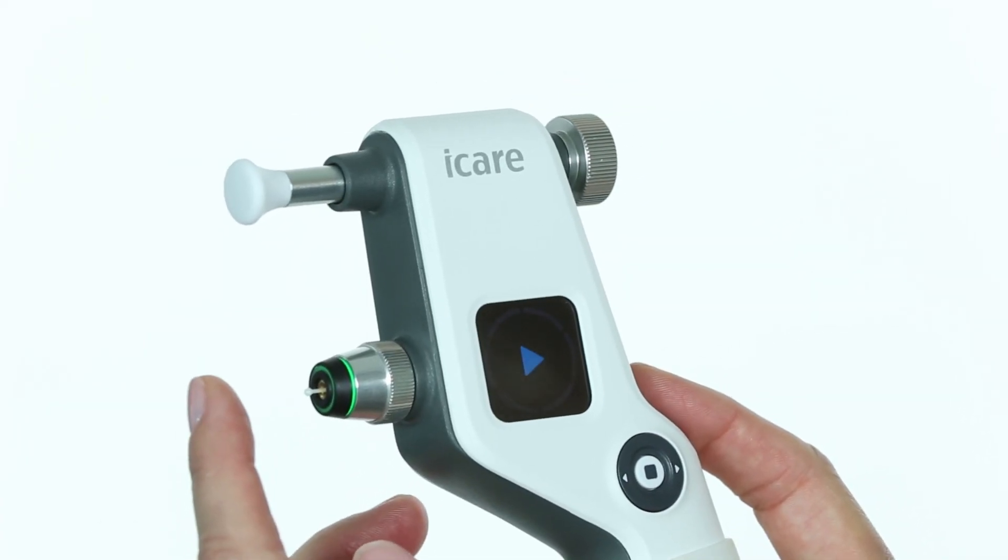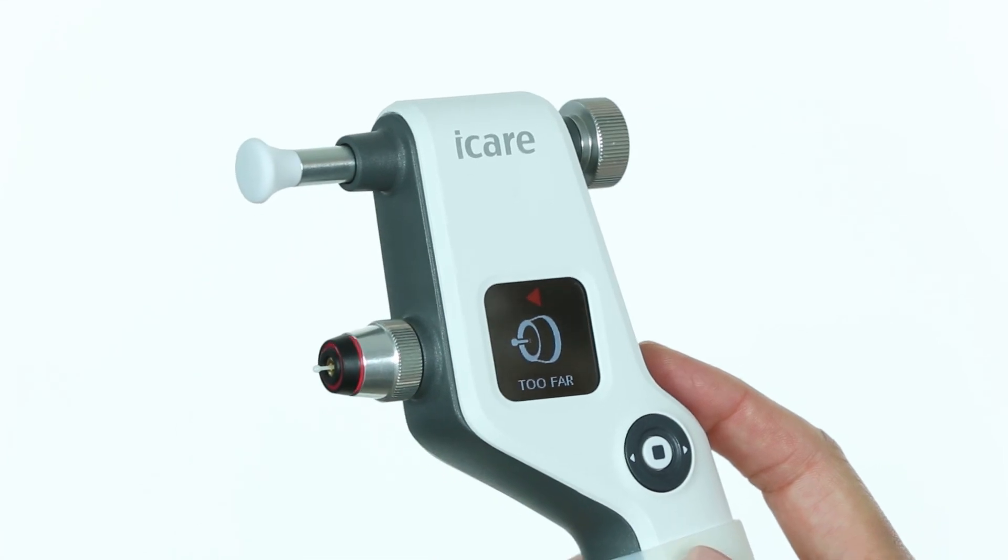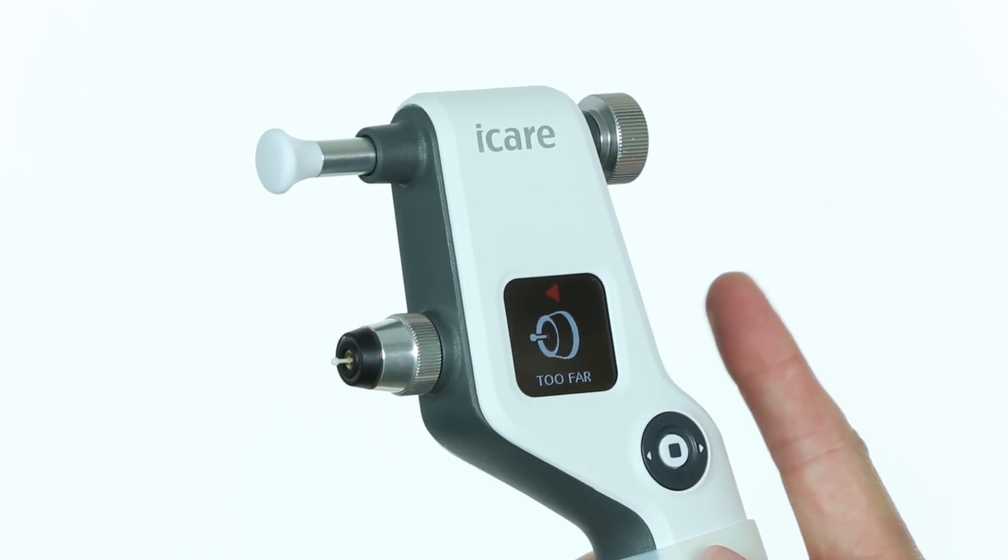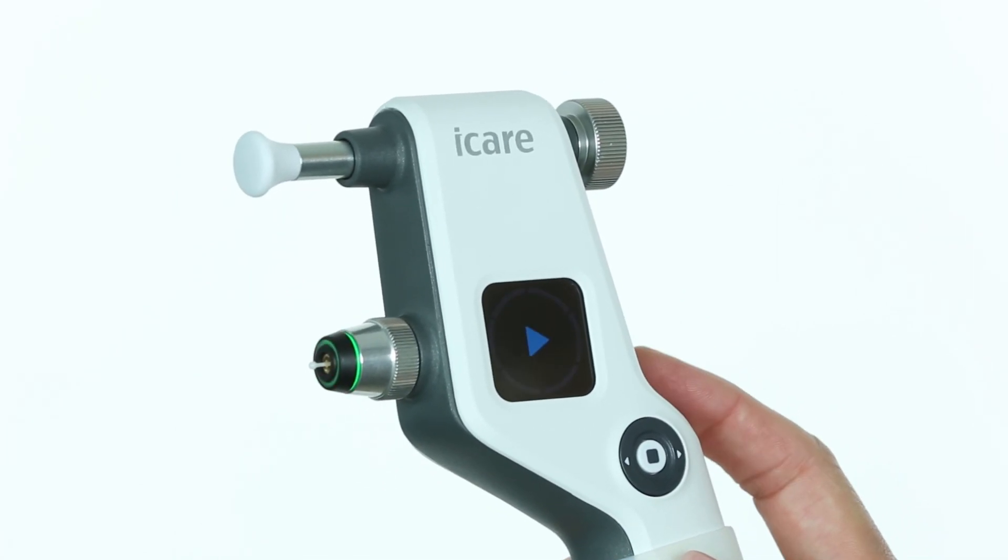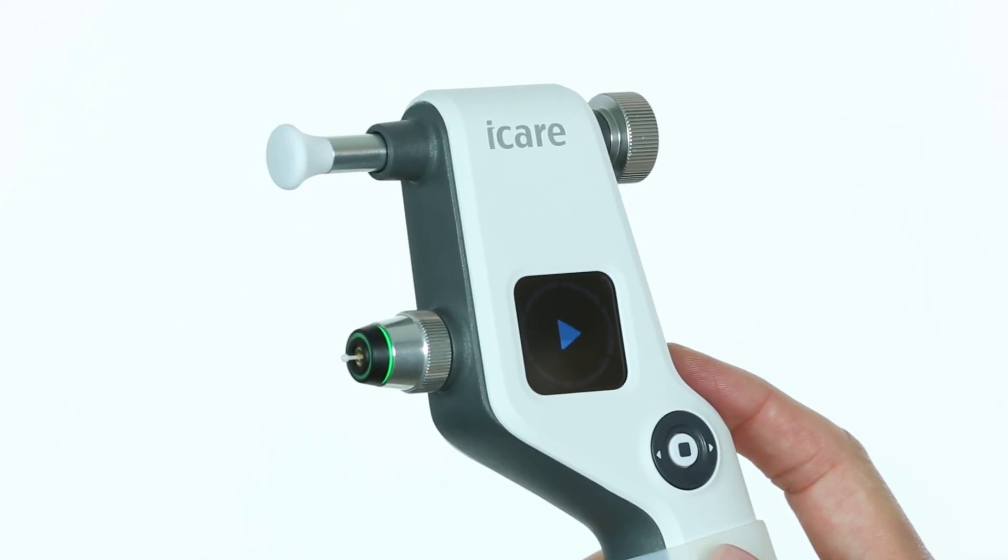If you are too far from the cornea, then too far will show in the display, and the probe base light flashes red. Clear the error message, correct alignment, and continue measurement.